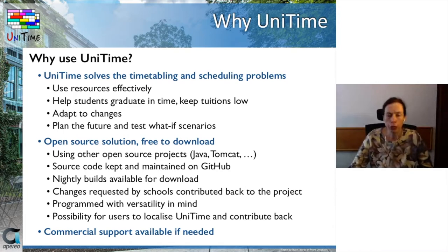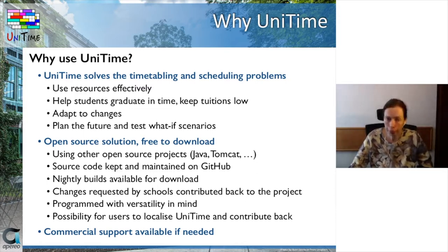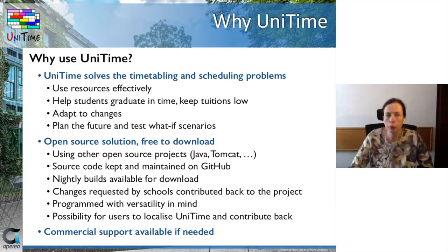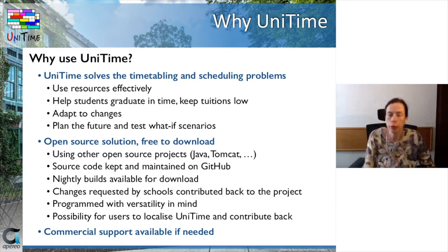Another large chunk of reasons is that UniTime is open source and free to download. It uses other open source projects such as Java or Tomcat. The source code is maintained on GitHub, and nightly builds are available for download. Changes that schools request are contributed back to the project in most cases, and it needs to be programmed in such a way that it works for all these different institutions with different needs, keeping the code versatile. There is also the possibility for users to localize UniTime and some contribute this localization back. The third main part is that we provide commercial support, which is available if needed.